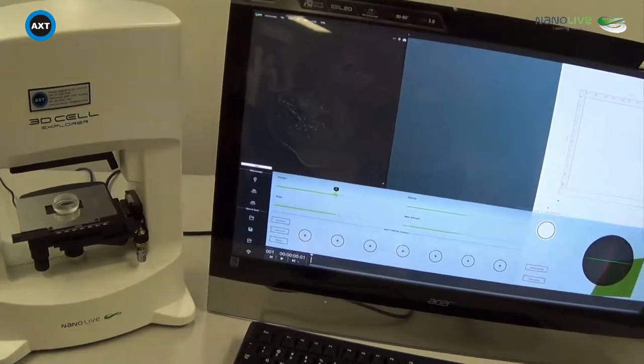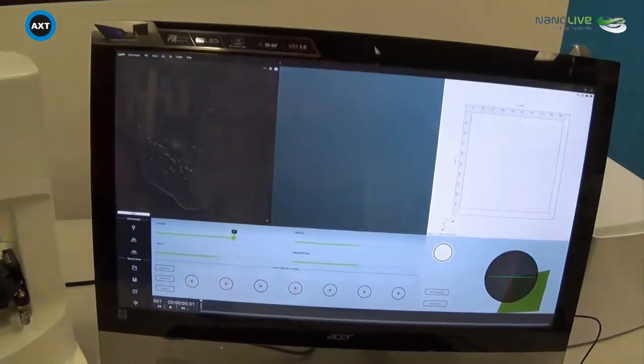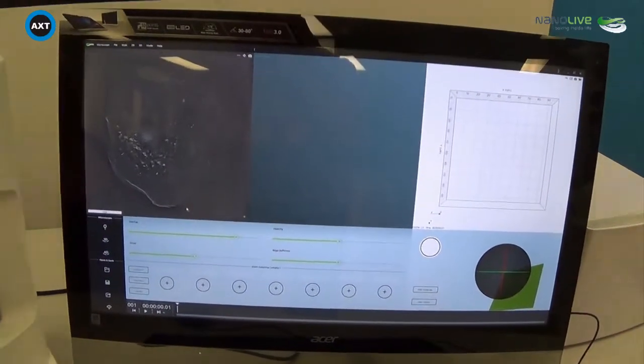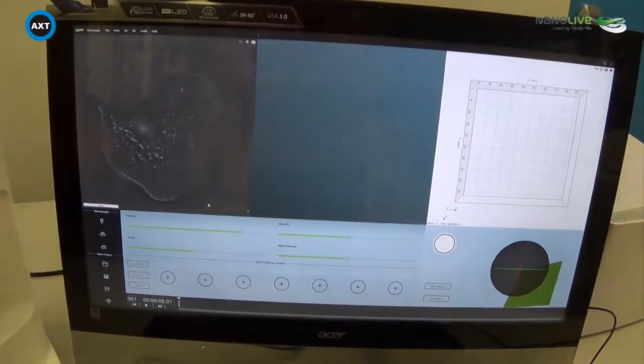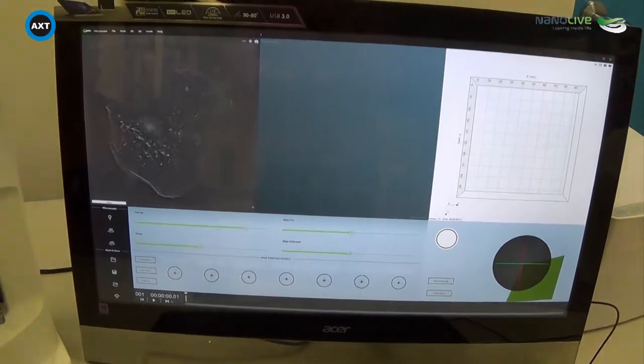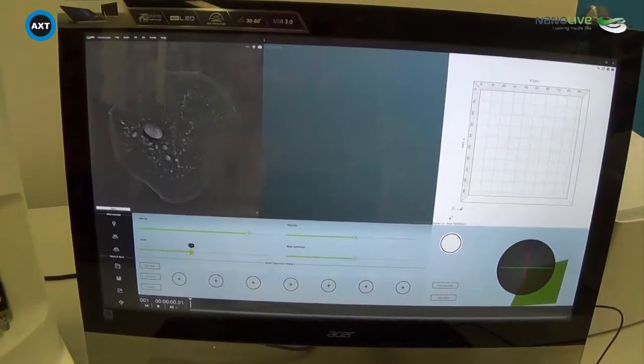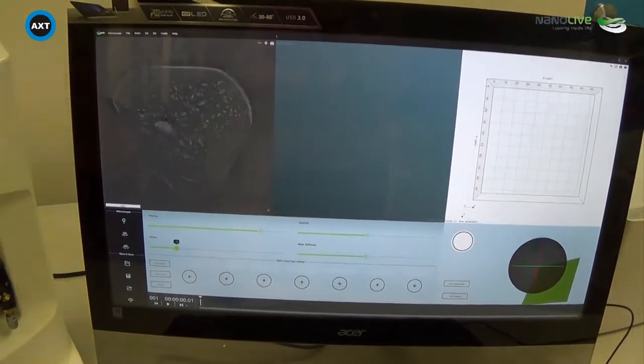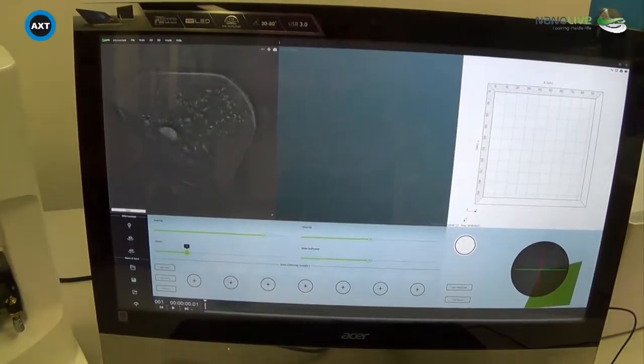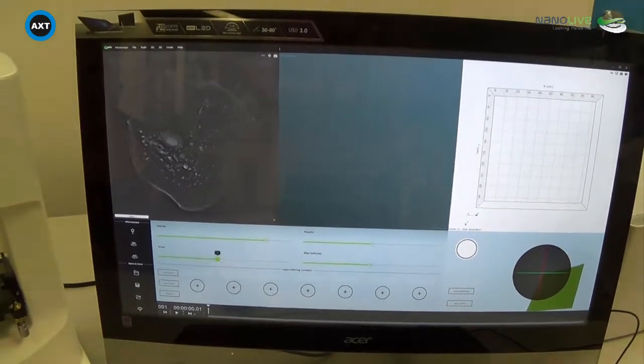And here we have our 3D image. If I just turn up the light, we're able to see a 2D slice of that cell. And we have a slider here that enables us to go through those slices. So we can see that the cell is quite curled up, curled at the edges, and it really does have a 3D structure.